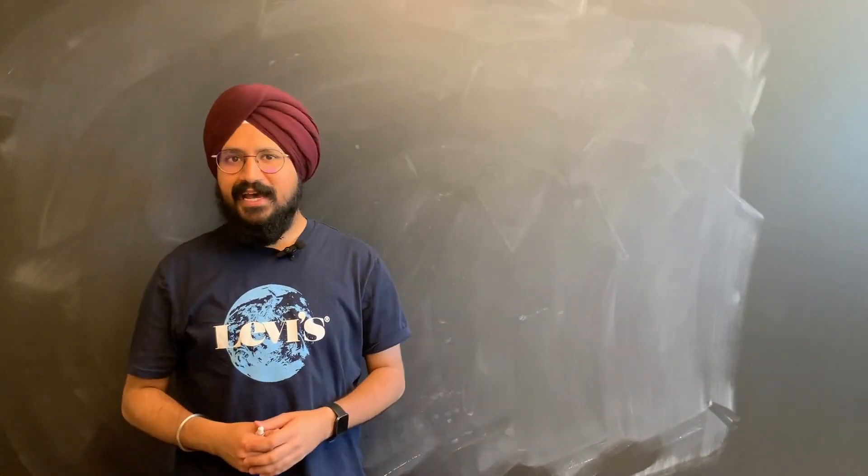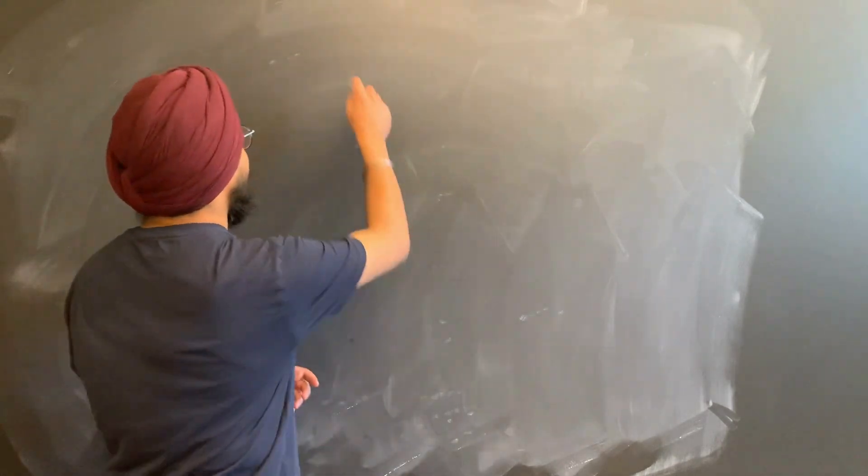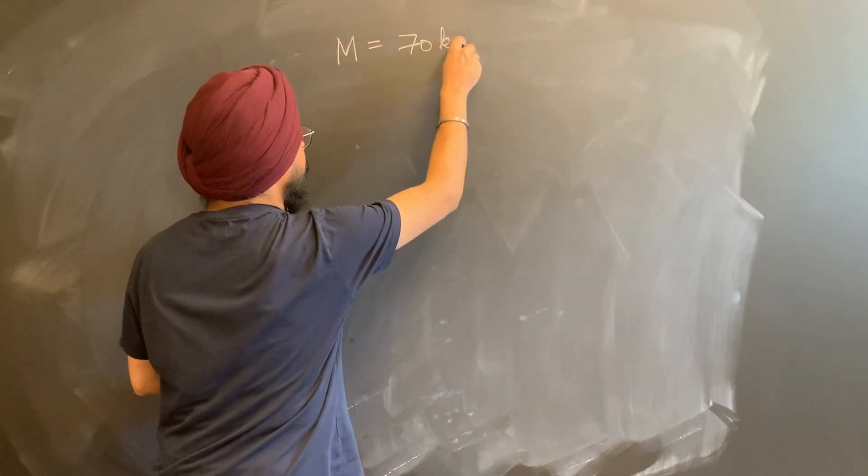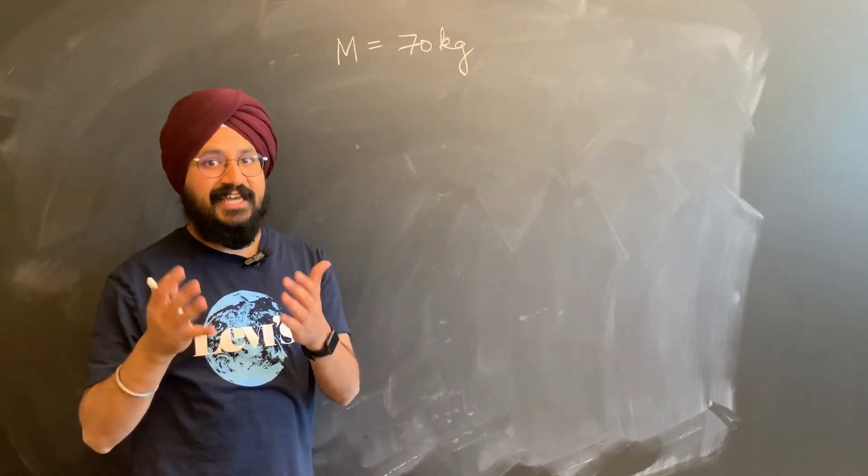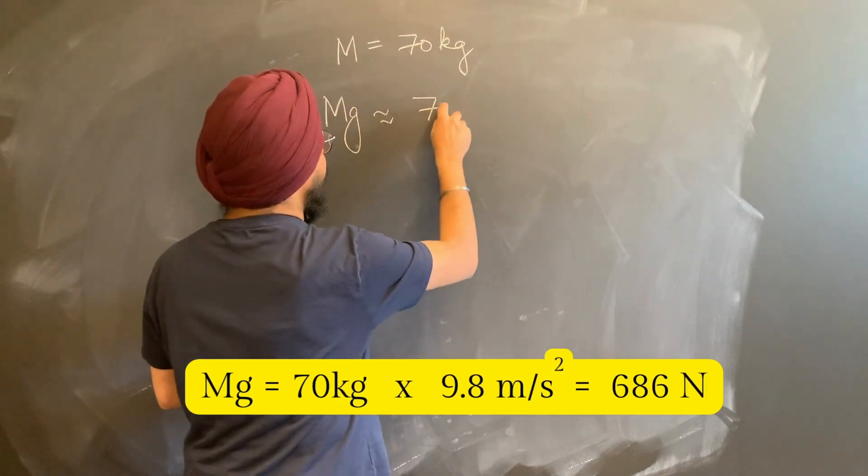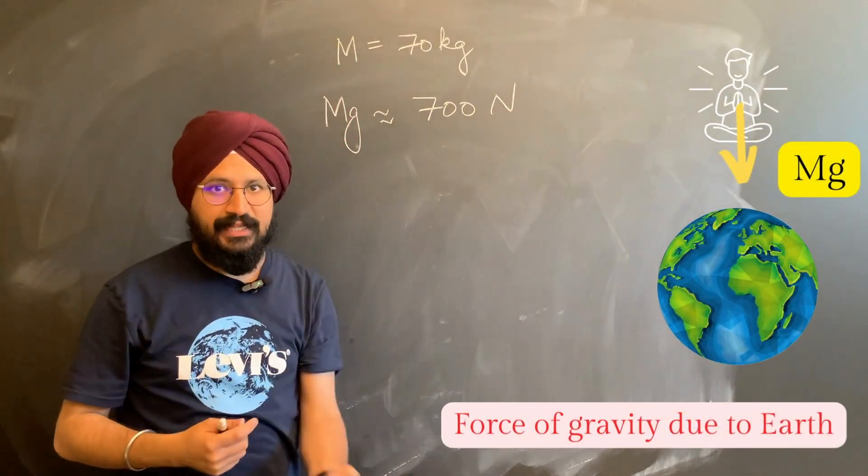Now, let's do some quick math. Let's say the average Fakir has a mass of about 70 kilograms. Which means the force of gravity, essentially their weight, is about m times g, about 700 newton's worth of gravitational force that the earth is pulling them by.